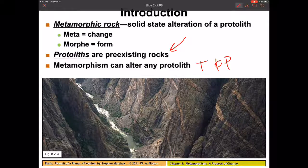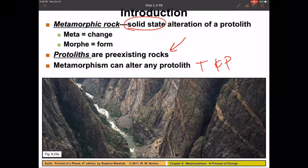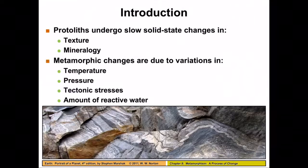It's really important to understand that metamorphism happens in the solid state. It's easy to think about a rock changing if it melts and reforms, but if a rock melts, we call that an igneous rock. So metamorphism is happening in the solid state, and the protoliths are going to undergo this solid-state change in texture and mineralogy.